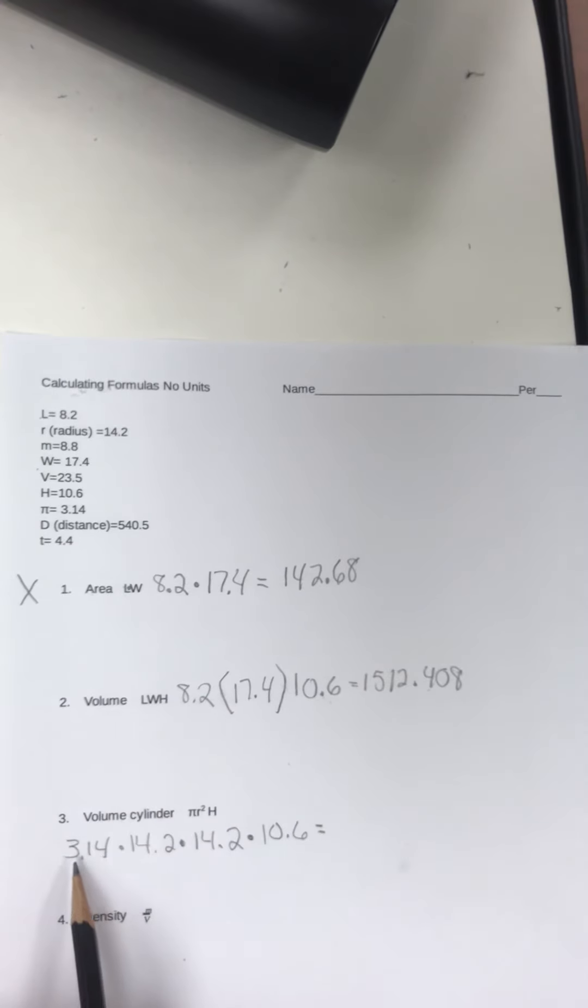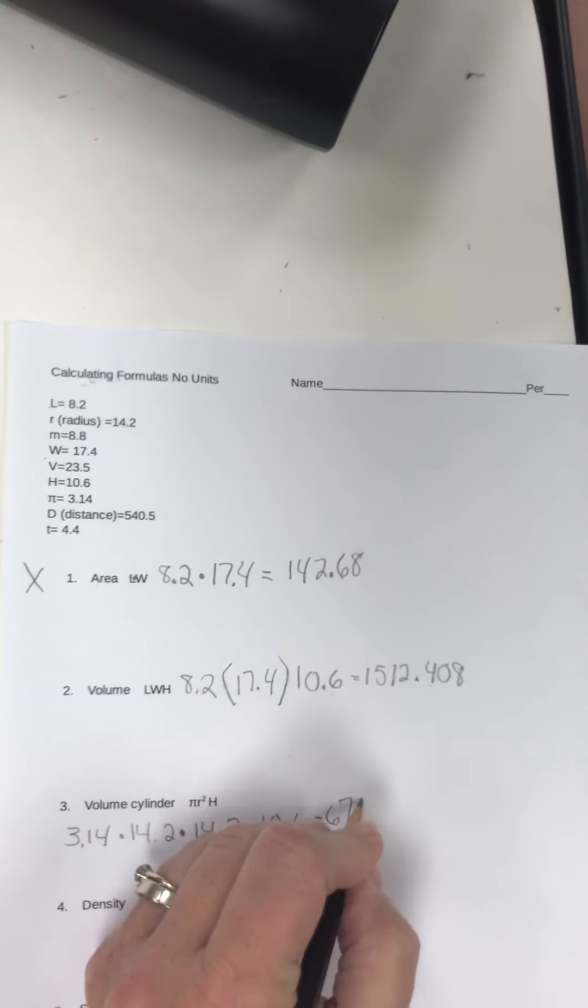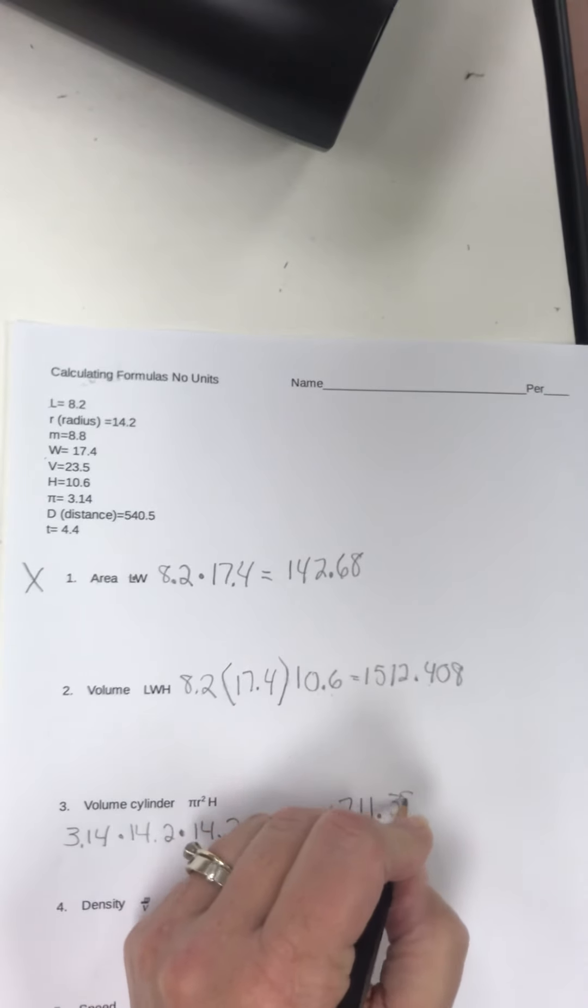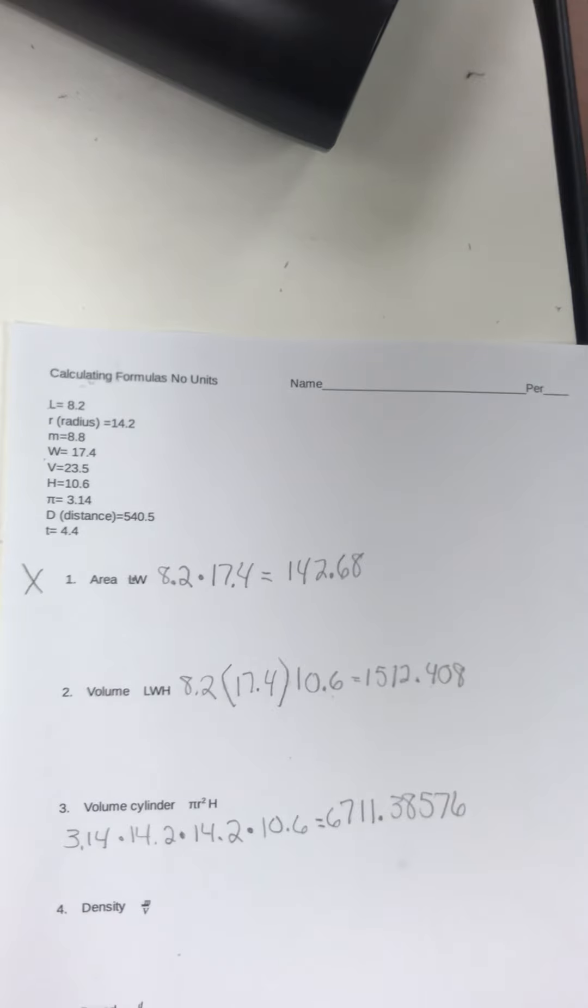So when you chug this through the calculator, 3.14 times 14.2 times 14.2 times 10.6, you get 6711.38576. And again, these really are all measurements, but since we don't have units on them, you really can't tell that. So you would have to round this to sig figs.